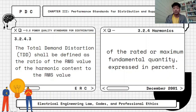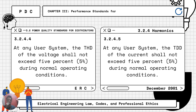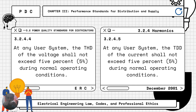Continuing the topic of harmonics under power quality standards for distributors: at any user system, the THD of the voltage shall not exceed 5% during normal operating conditions. Similarly, at any user system, the THD of the current shall not exceed 5% during normal operating conditions. Both the voltage and current THD limits are the same — they must not exceed 5%.